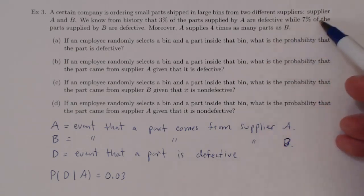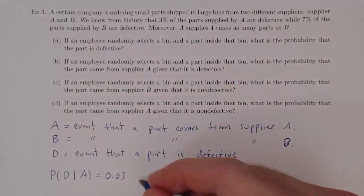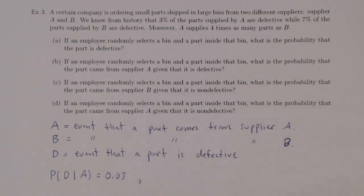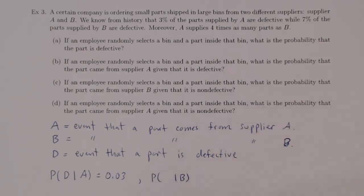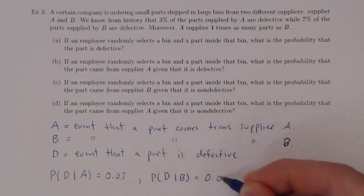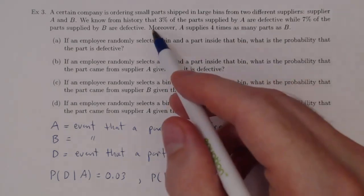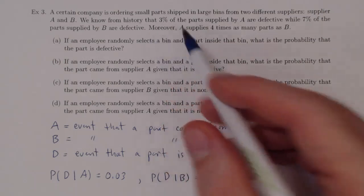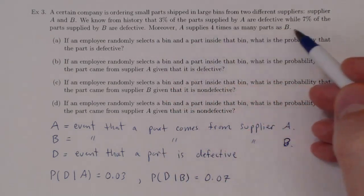While 7% of the parts supplied by B are defective — that's the other conditional probability. So given that a part is coming from Supplier B, the probability it is defective is 7%, or 0.07. We also know that A supplies four times as many parts as B.